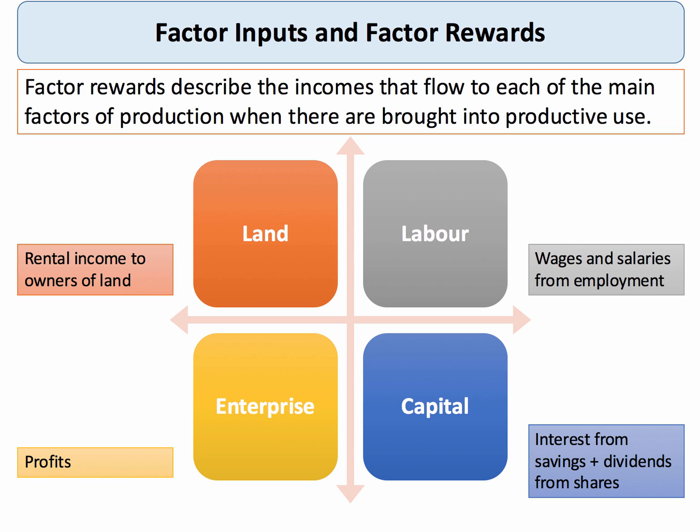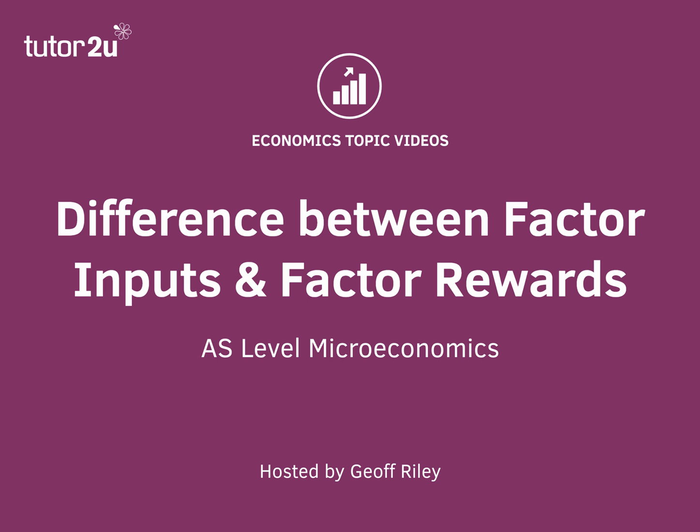Profit is essentially a reward to taking risk and supplying commercially viable products to markets. And the main reward to capital would be, for example, interest from savings and the dividend flows coming from equities — shares in a business. Those are the differences between factor inputs and factor rewards.